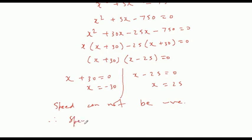The usual speed of the train equal to 25 km per hour.